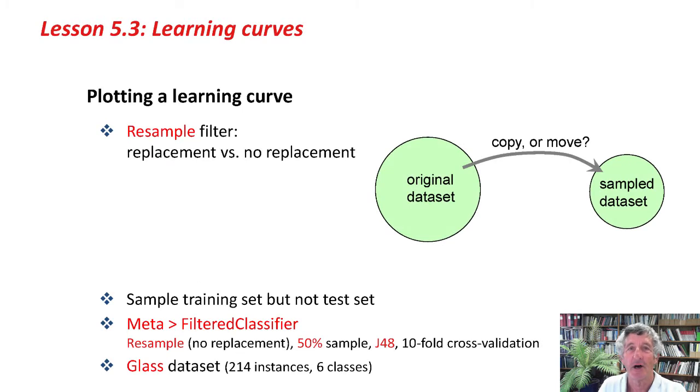Let's talk about how to plot a learning curve in WEKA. We're going to sample the data. When you do sampling, you need to understand the difference between sampling with replacement and sampling without replacement. When you sample, it's really a question of whether you move or copy the data. If you sample with replacement, then you copy it from the original data set to the sampled data set. You don't really take it out.